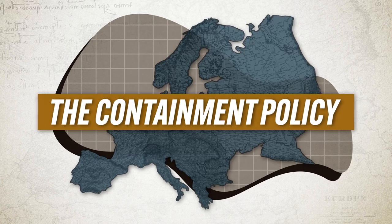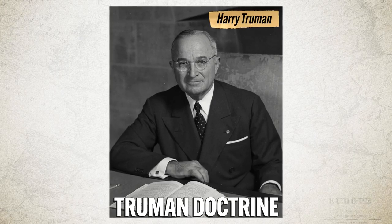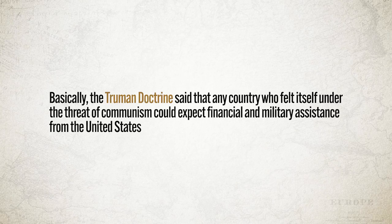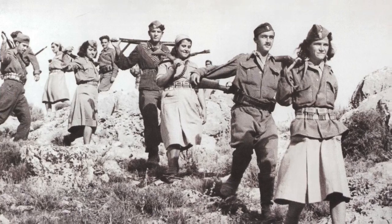To understand why the Cold War took the shape it did, you have to understand the US policy of containment. Because Stalin appeared to want the whole world made over in the image of Soviet communism, President Harry Truman articulated the Truman Doctrine — any country under the threat of communism could expect financial and military assistance from the United States. The first test came with a civil war in Greece between communist and anti-communist forces. When Britain had to step back, the US stepped in under the Truman Doctrine, providing financial aid to the anti-communists, who ultimately won.